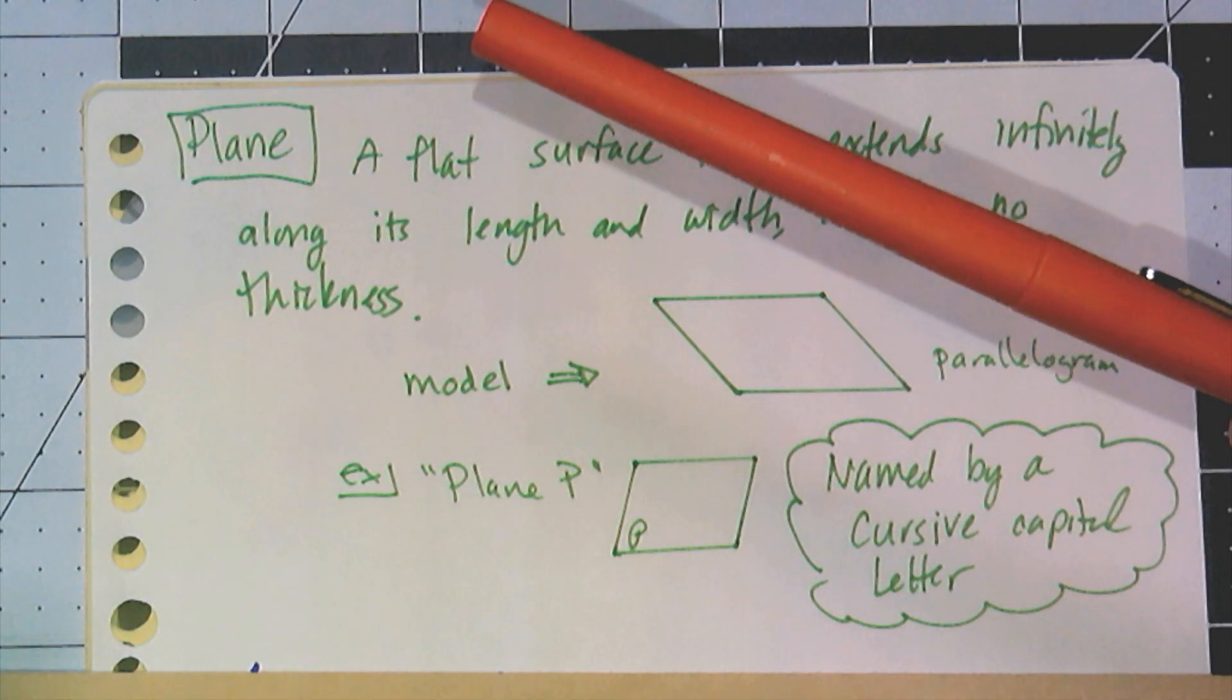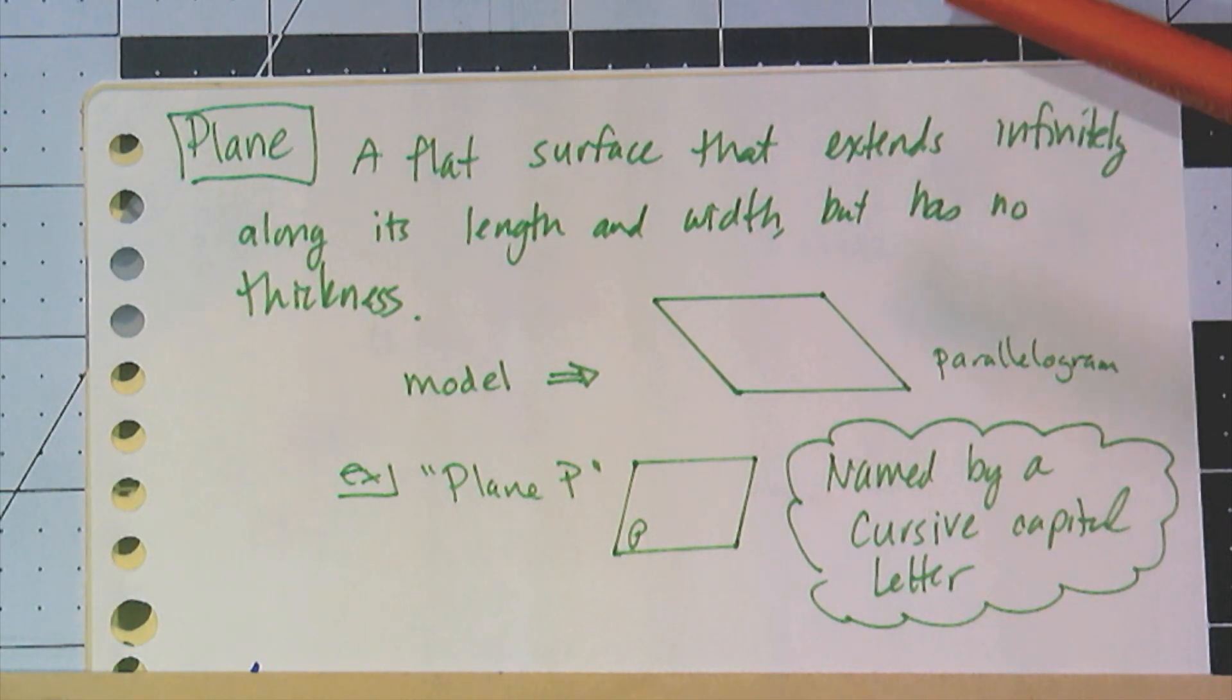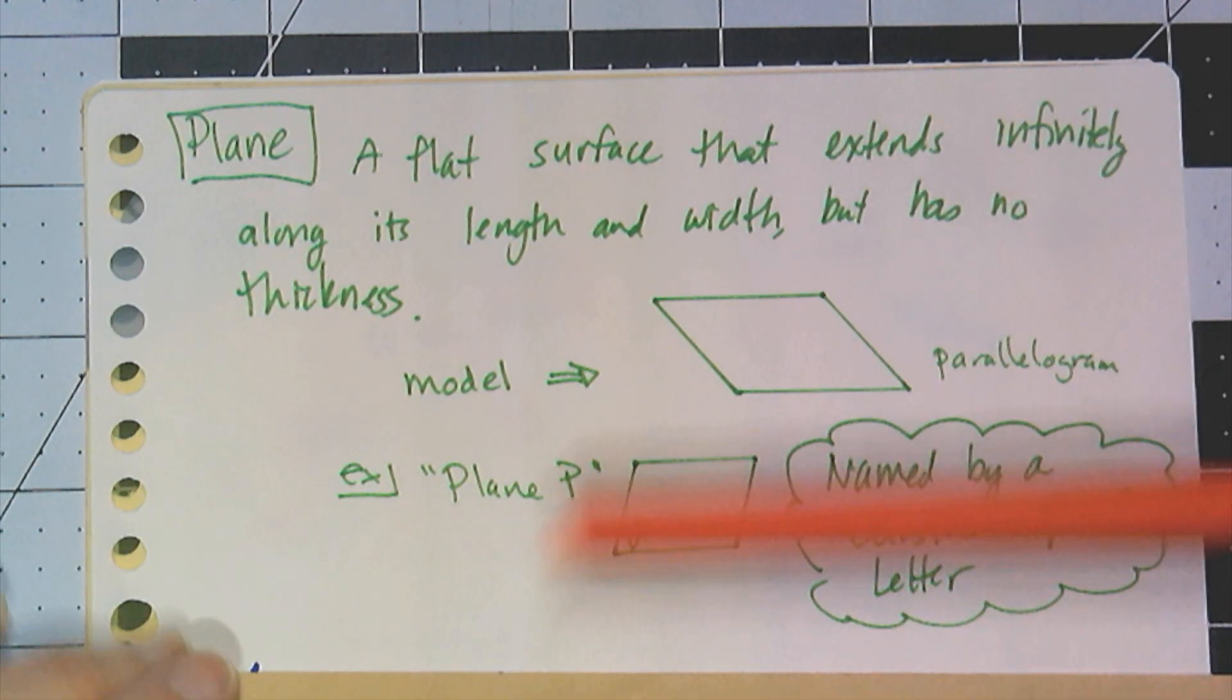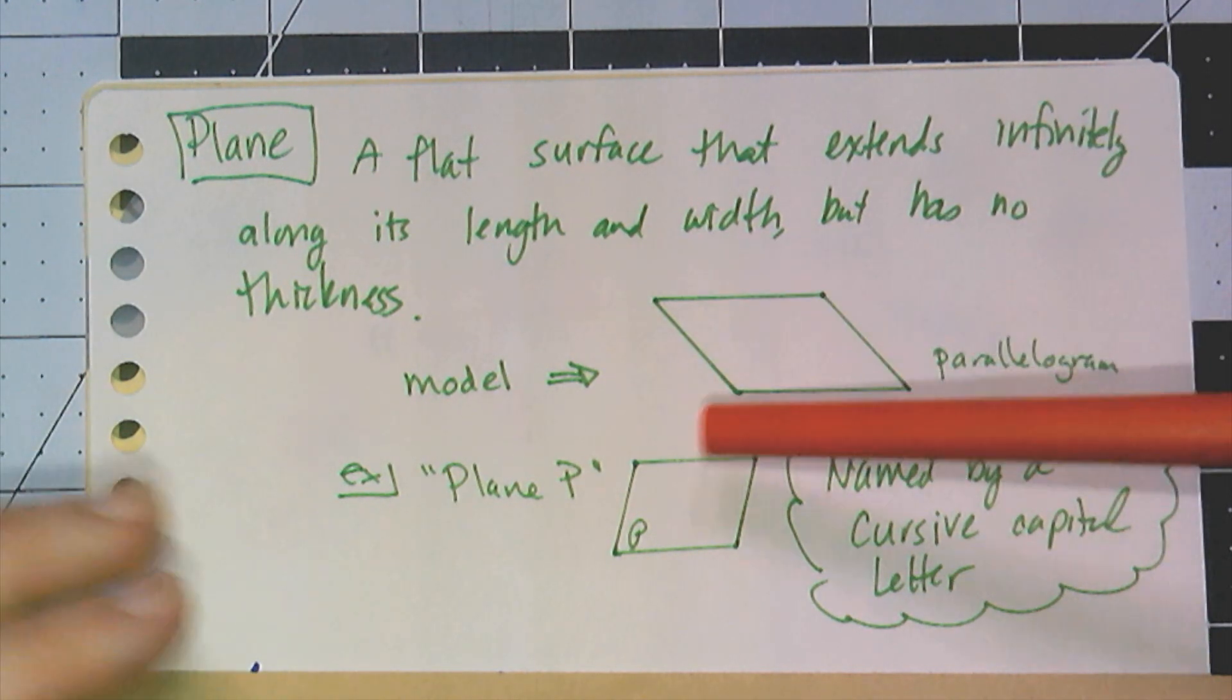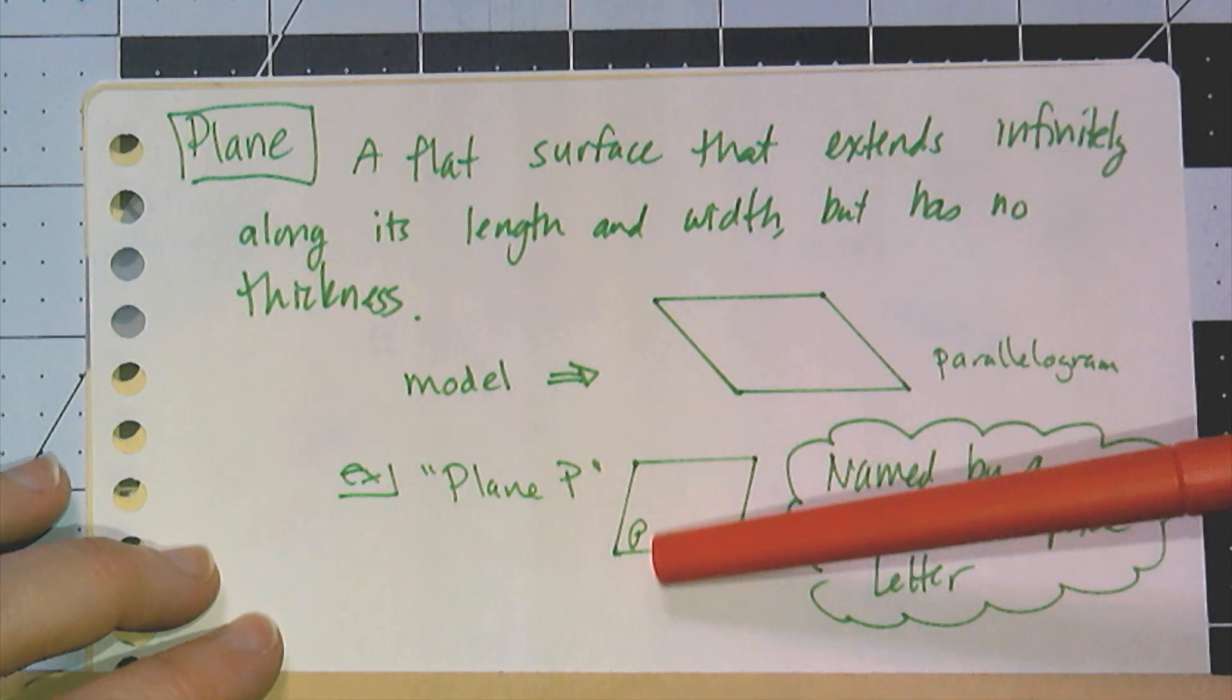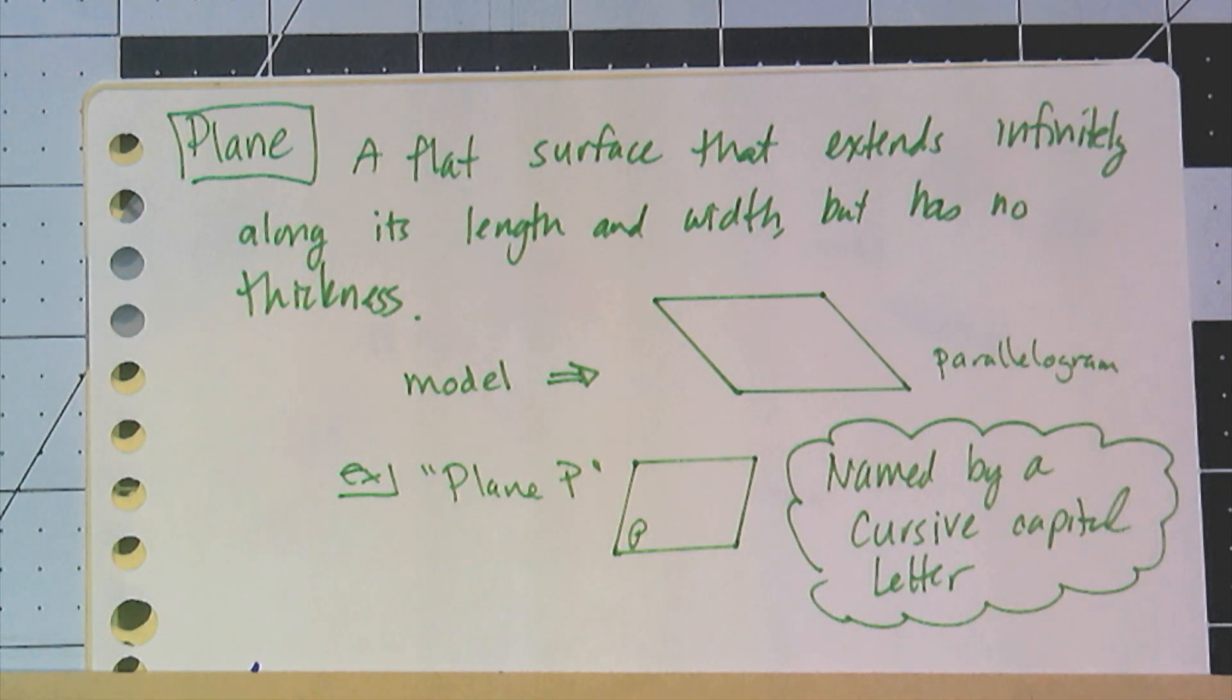The third foundation term is plane. It is a flat surface that extends infinitely along its length and width but has no thickness. So it has two dimensions but not a third. The model we draw is a parallelogram. The parallelogram can slant either way. They are named by a capital letter in cursive. For example, this is plane P.